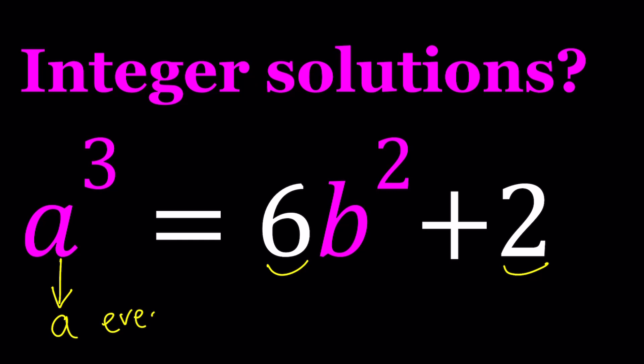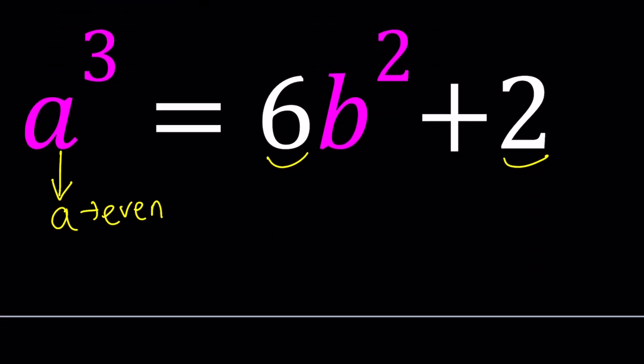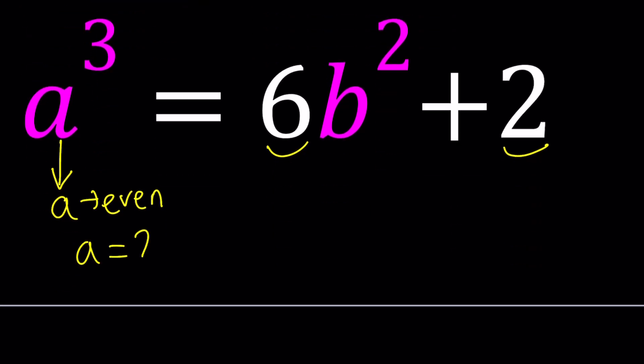Since a is even, we can write a as 2 times another integer. Let's call that integer c. Let's set a equal to 2c. 2c or not 2c, hopefully you see what I see. Now when you do the replacement, you're going to cube 2c. That's going to give you 8c³ = 6b² + 2.